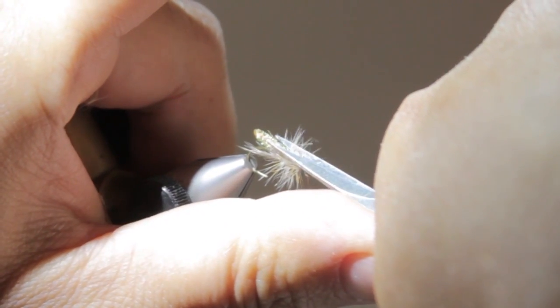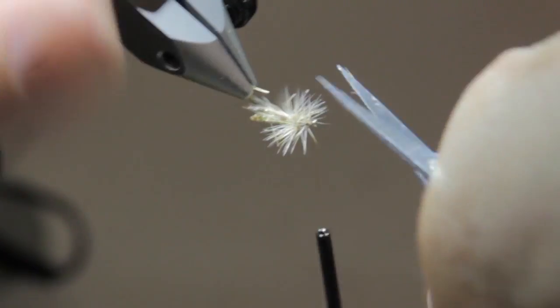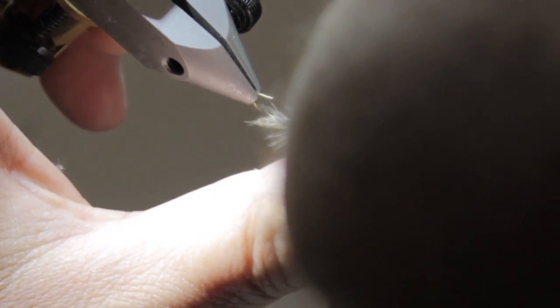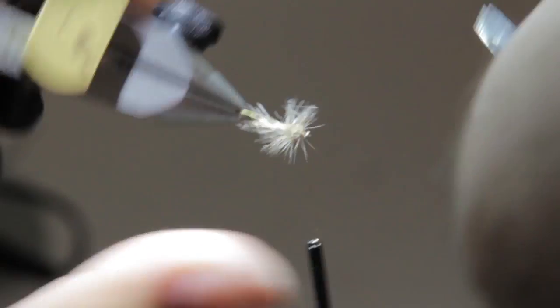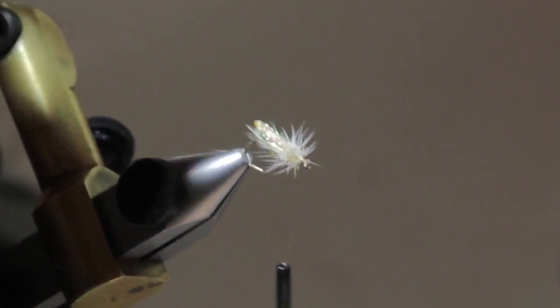Trim the top of this and the bottom so that this fly lays flat on the surface. You don't want those hackles sticking up and keeping your fly riding real high. This is a surface film fly.